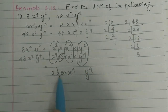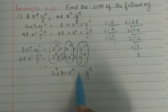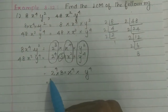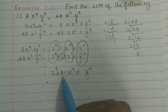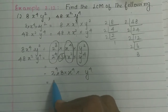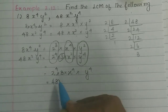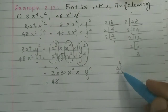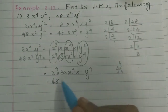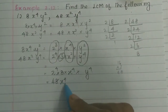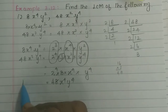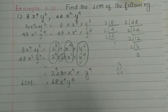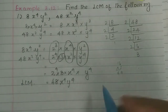So the LCM is 2⁴ × 3 × x⁴ × y⁴. Now 2 to the power 4 is 16, and 16 into 3 is 48. So the LCM is 48x⁴y⁴. Now let's also write the GCD — the two common terms give us 8x²y².